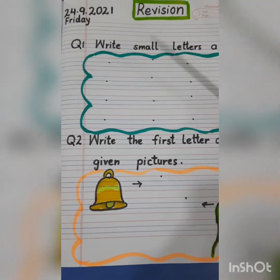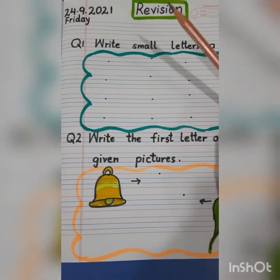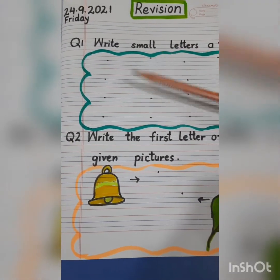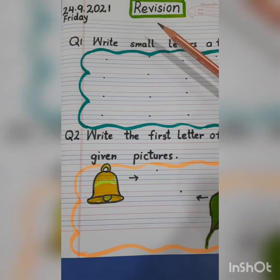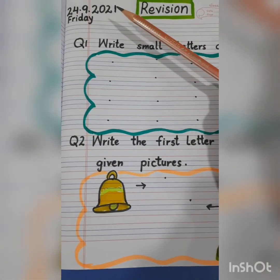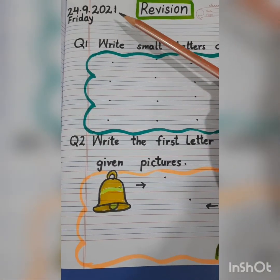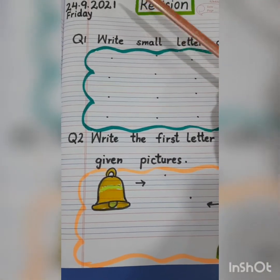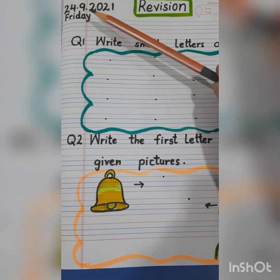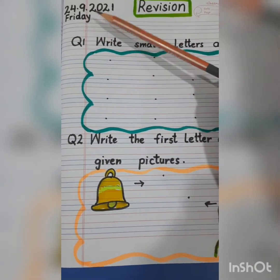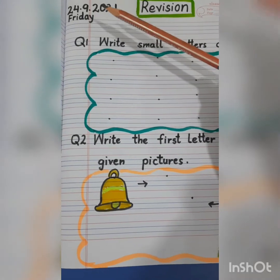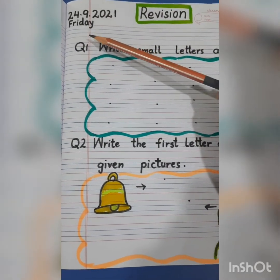Good morning dear children! How are you today? So today we are going to do revision again. First of all, let's see what is the date and day today. Today is 24th of September 2021 and the day is Friday.